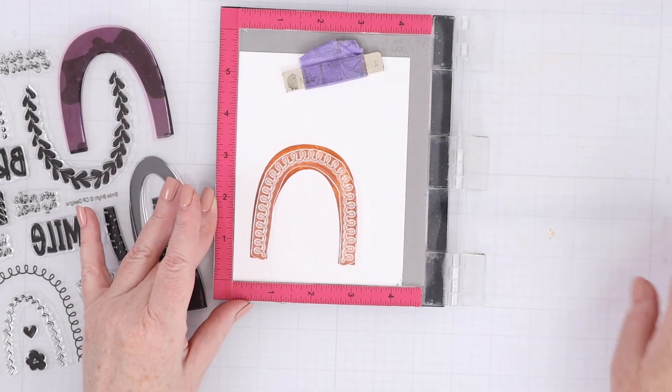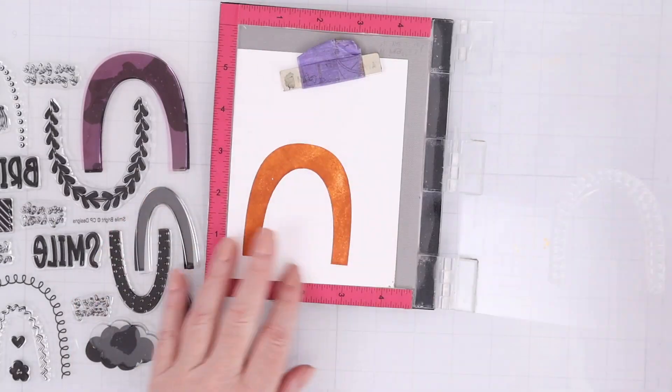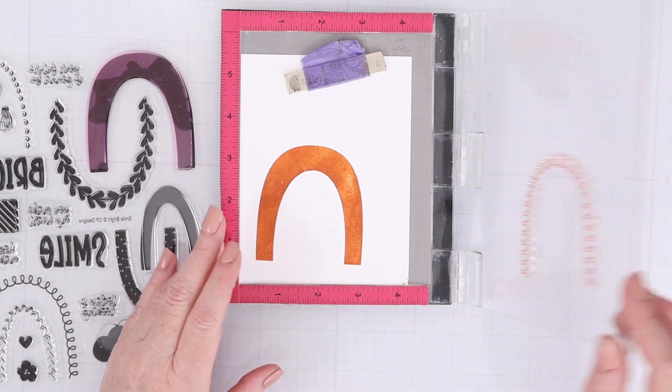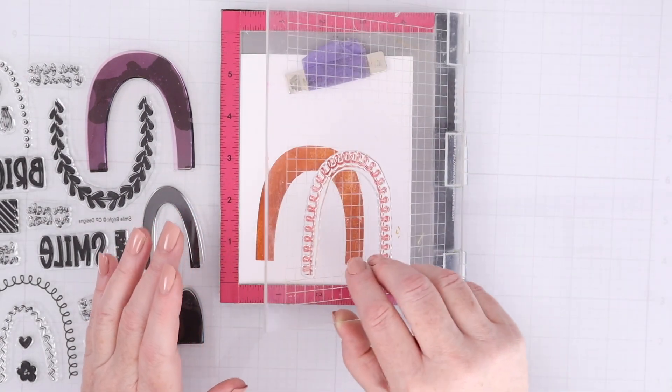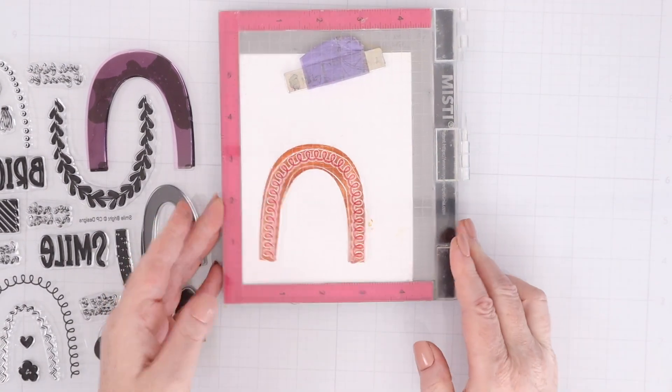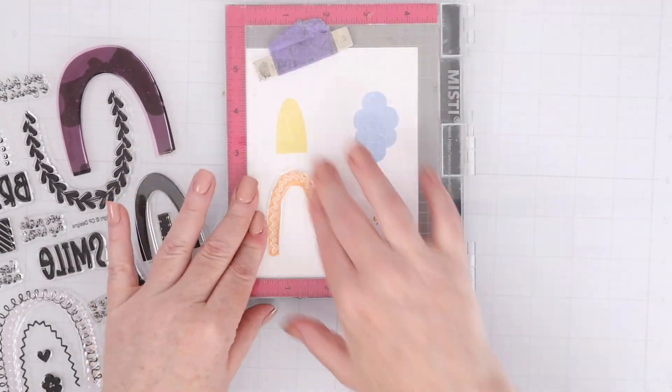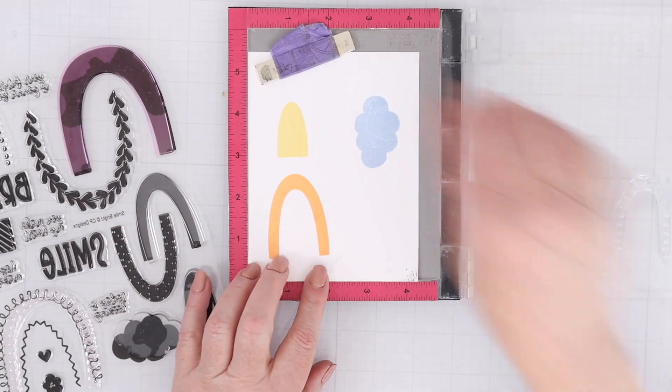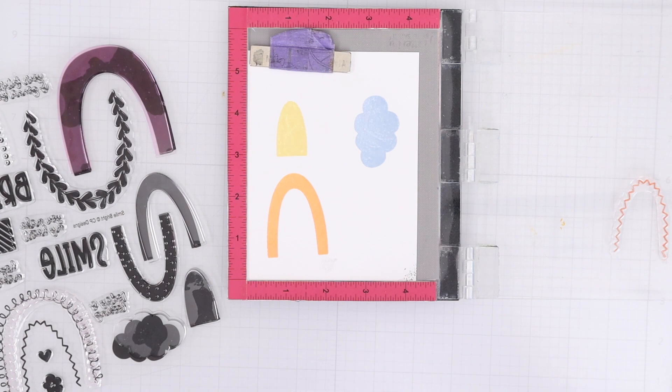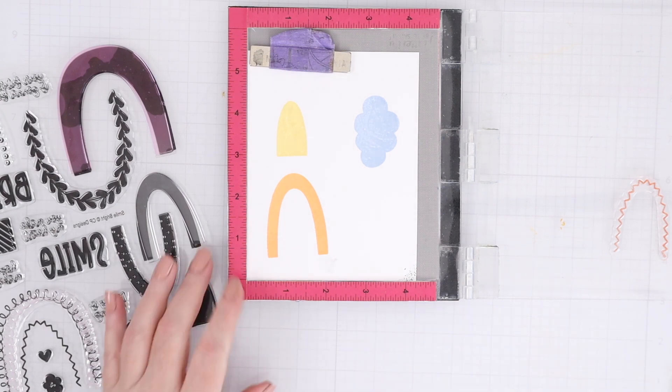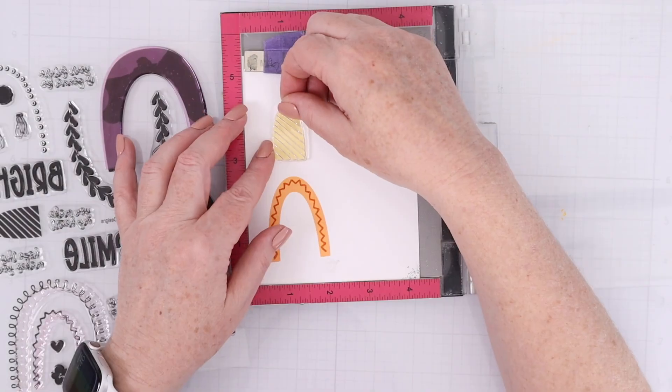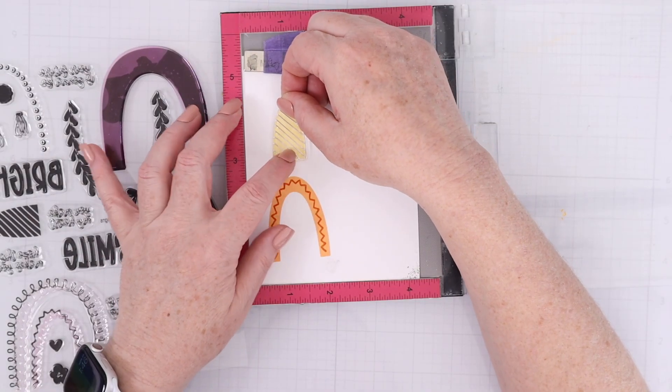Now I'm going to, since I let the solid images dry, I'm going to stamp a second layer, and the second layer is going to be a decorative layer. So for this I have Terracotta, and I'm going to stamp the decorative layer of Terracotta onto the Ginger arc. And then I'm going to stamp Ginger onto the Apricot arc.